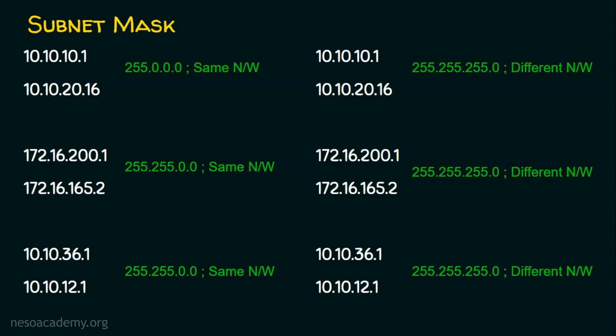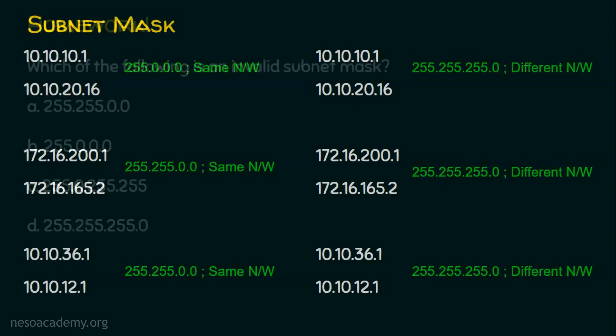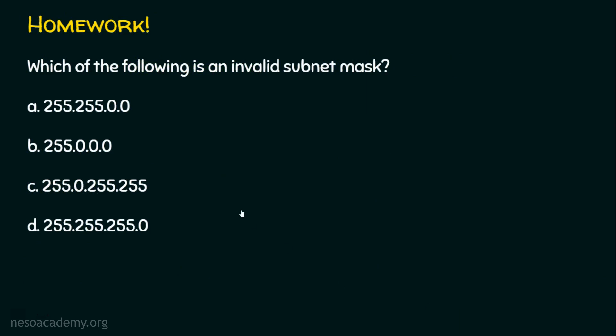Let's see the homework question. The question is: which of the following is an invalid subnet mask? In a classful world, we have only three kinds of subnet masks. Recollect what the three valid subnet masks are, identify which is the invalid subnet mask, and post your answers in the comment section. I hope you enjoyed the lecture — thank you for watching.